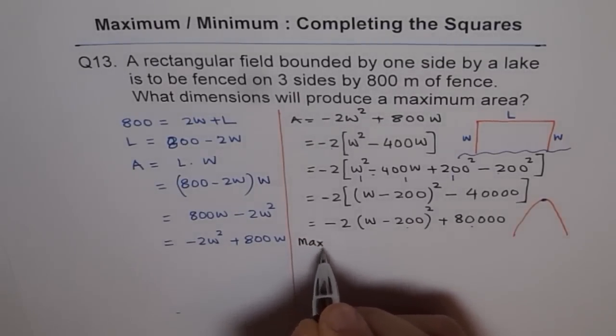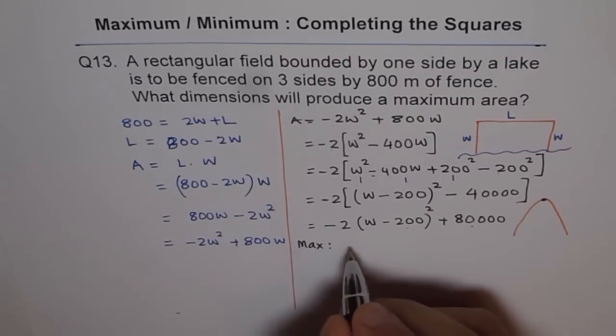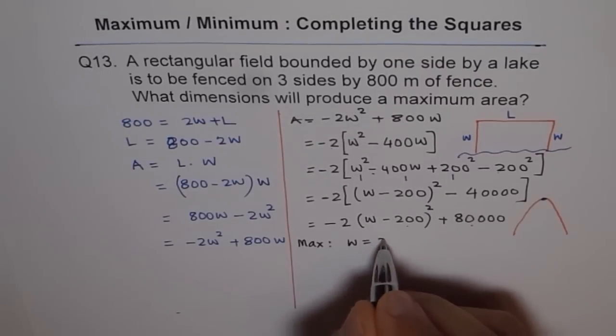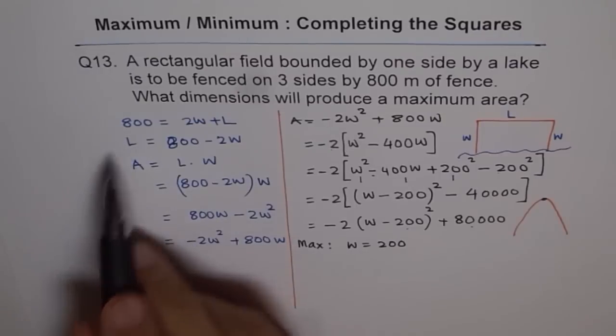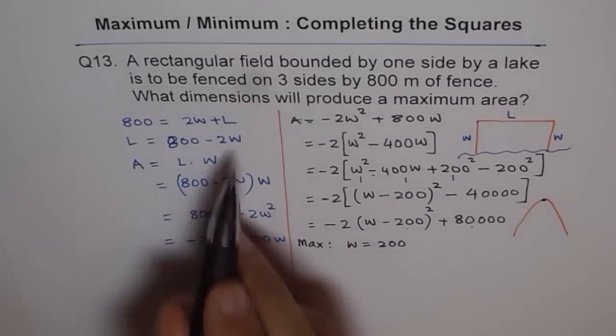So maximum is at width equals to 200. If width is 200, what should be the length?